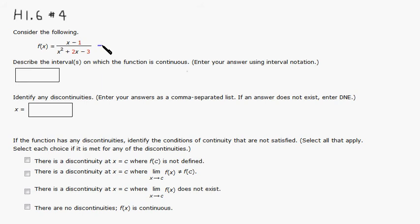First, we're going to factor out the denominator. So x minus 1 on top, and we can factor out the denominator. It's going to be x plus 3 and x minus 1.